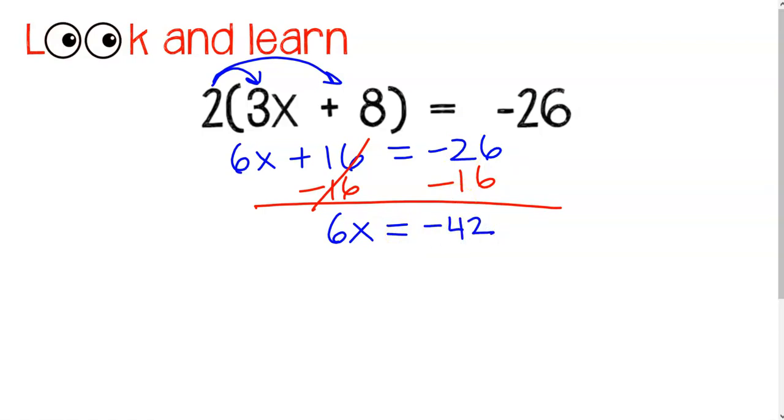Now, in order to isolate the variable x from its coefficient, we will divide both sides by 6, which is the same as multiplying by 1 sixth. And there's our answer.